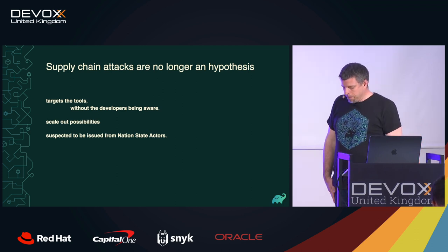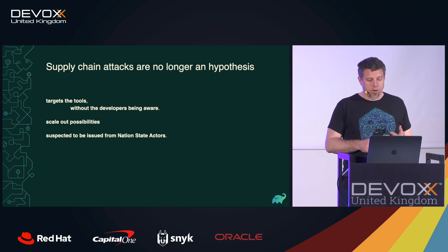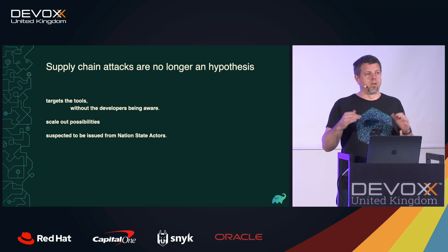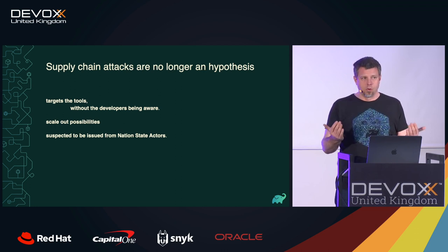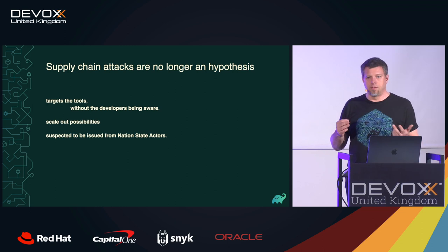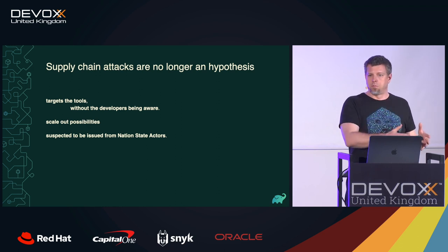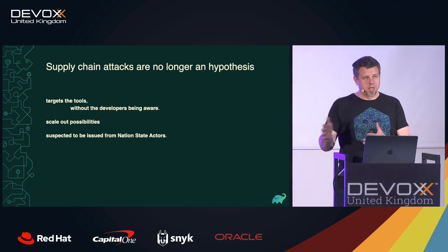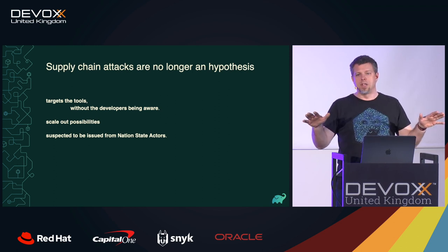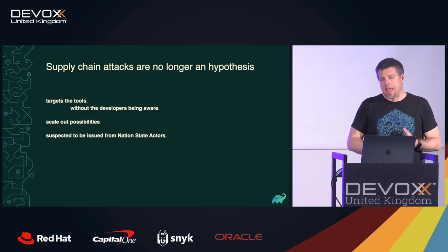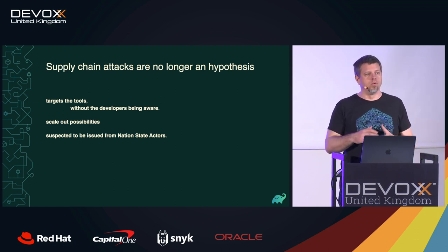The reality in today's world is that direct supply chain attacks are no longer a hypothesis. We've seen attacks targeting the tools themselves — developers don't even realize that what they're producing becomes infected software. One of the main benefits of such attacks is the scale-out aspect: by hitting popular software that gets deployed to many customers, you have an increased attack surface just because of that popularity effect.